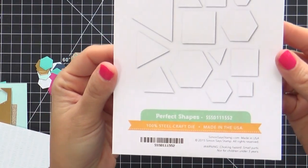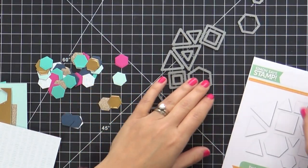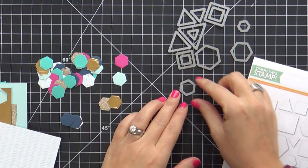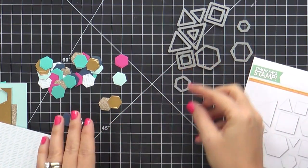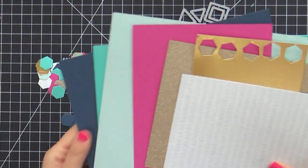Here's the dies. Perfect shapes. That's the name of them. They coordinate with the perfect shape stamp set. Could possibly be my favorite die set and stamp set ever in the history of ever.